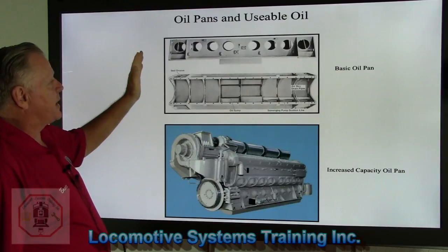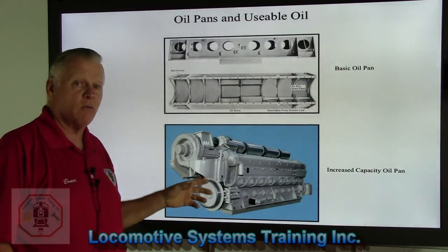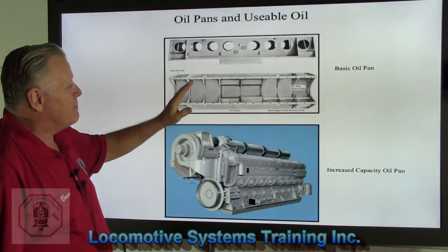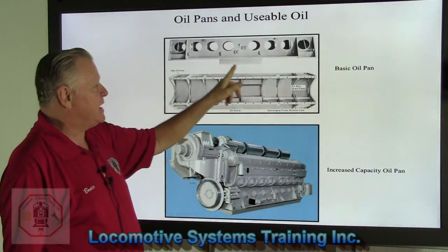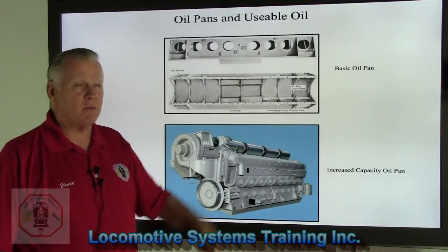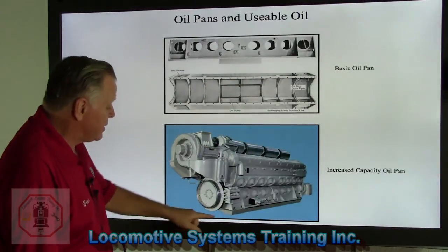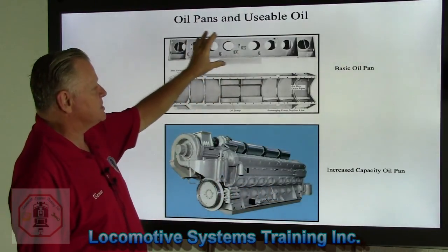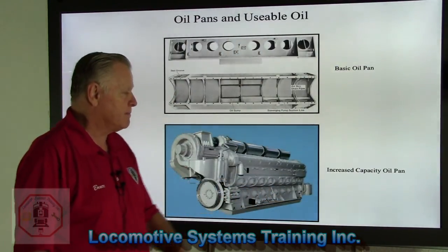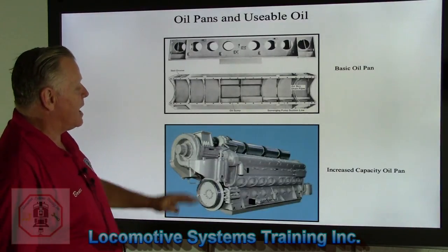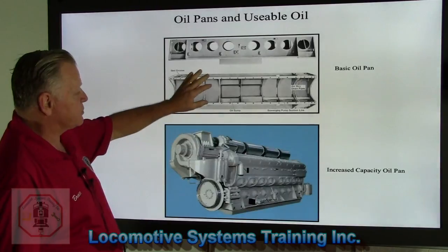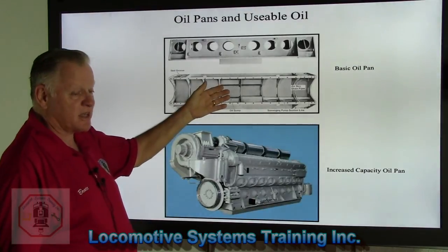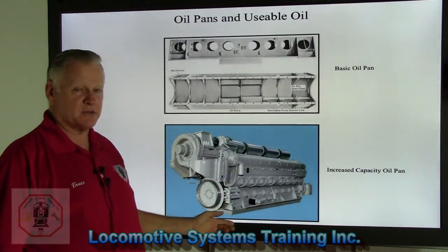Let's talk about oil pans and usable oil. The basic oil pan holds about 50 to 60 gallons of usable oil. A newer engine with an increased capacity oil pan holds 150 gallons of usable oil — a big difference in how much engine oil can be held.